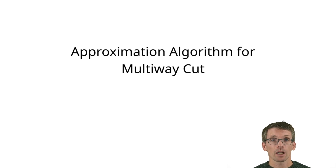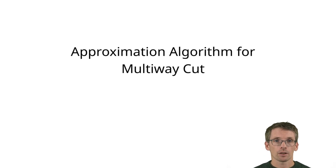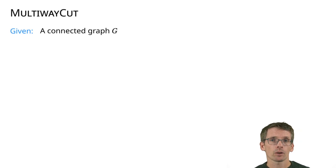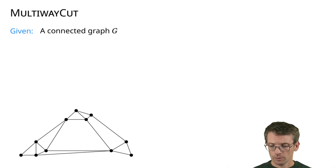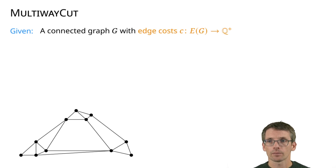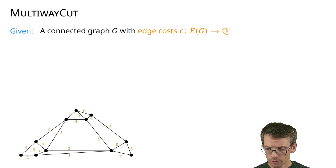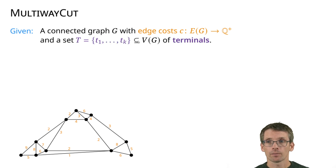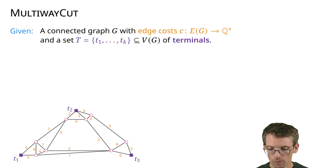We're now going to give an approximation algorithm for the multi-way cut problem. The problem is defined on a connected graph with positive edge weights, and we have a set of dedicated vertices called terminals — let's say we have three terminals.